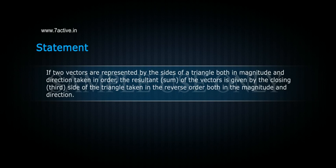If two vectors are represented by the sides of a triangle, both in magnitude and direction taken in order, the resultant sum of the vectors is given by the closing third side of the triangle taken in the reverse order, both in magnitude and direction.